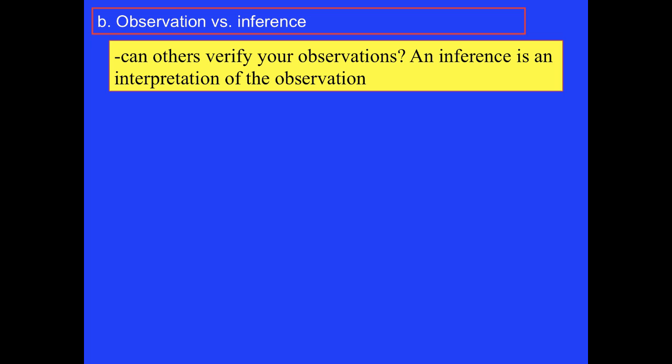It's also important to recognize the difference between an observation and an inference. Observations are data or information that can be verified by others and collected in the act of experimenting. Inferences, in contrast, are our interpretations of the observations we've made. We infer based on what we observe.